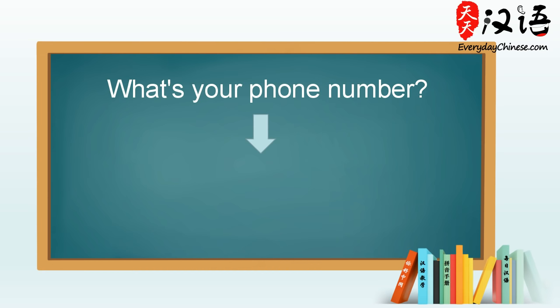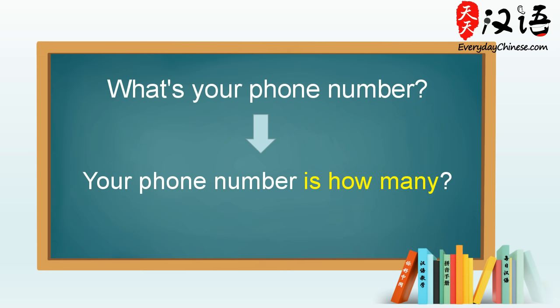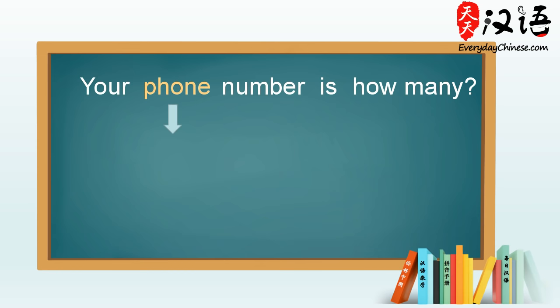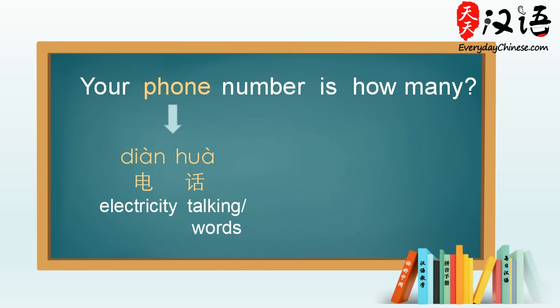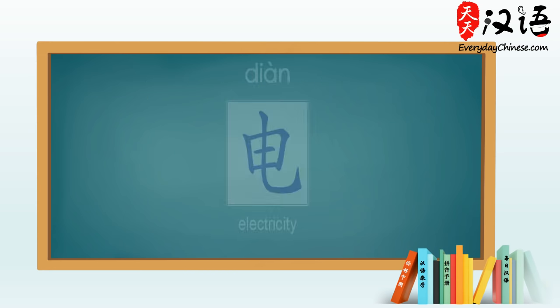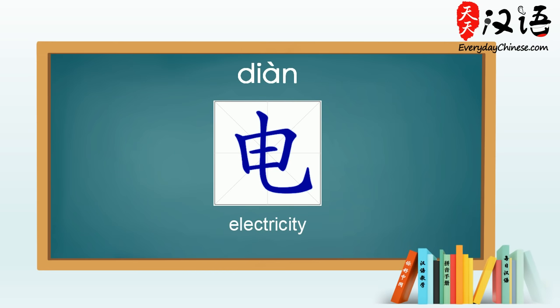To ask for someone's phone number in Chinese, we literally ask: your phone number is how many? The Chinese word for phone is 电话. 电话. Here, the word 电 means electricity, and 话 means talking or words. 电 is a very useful word, as it can be combined with other words to mean appliances powered by electricity.